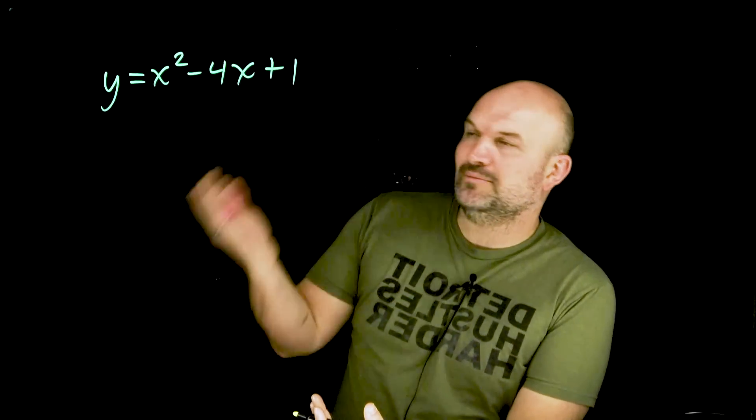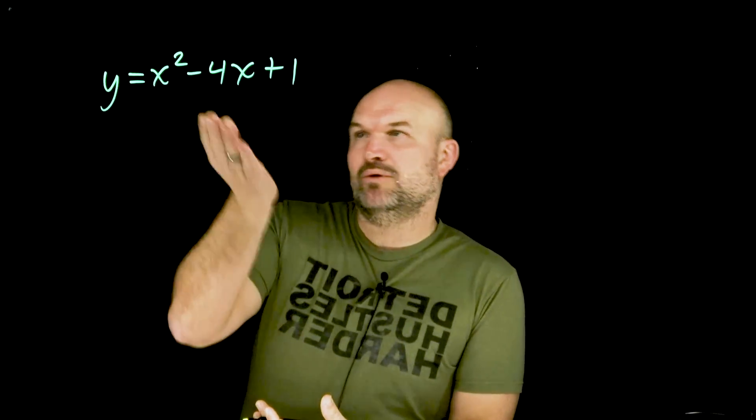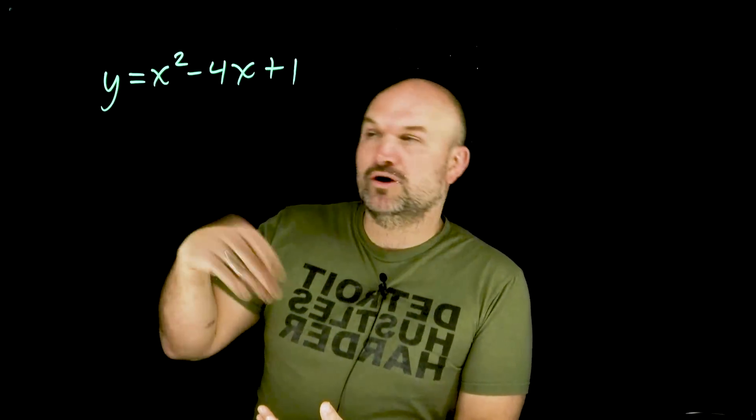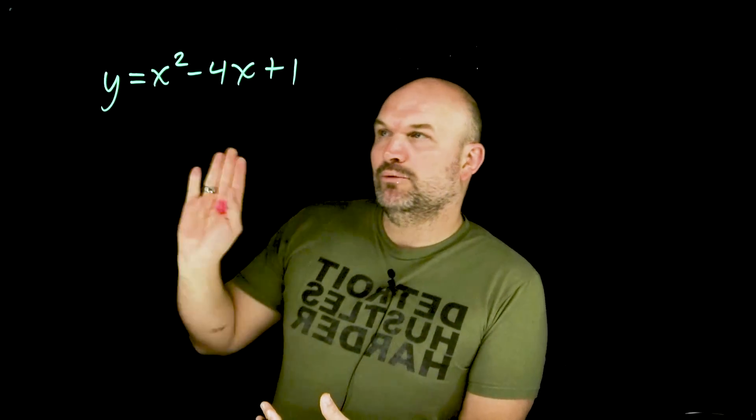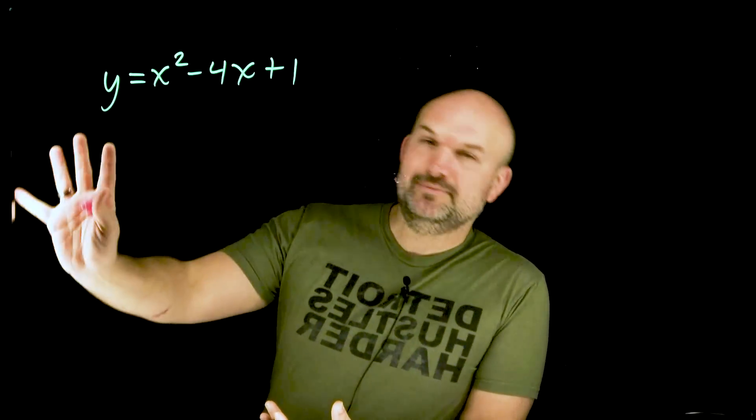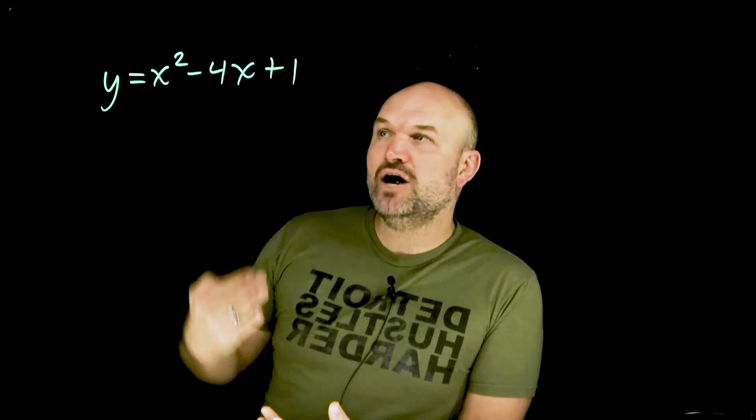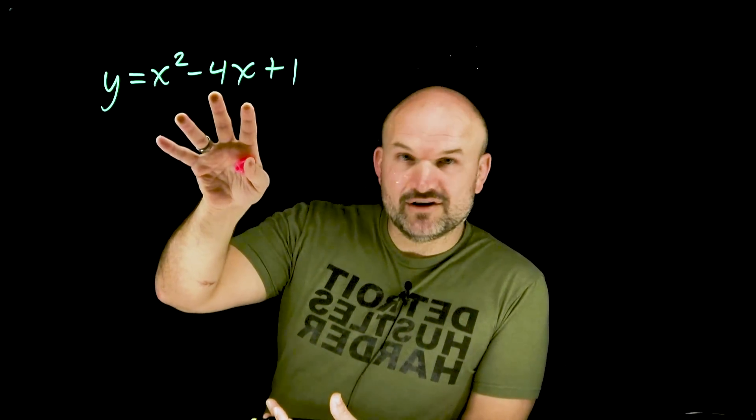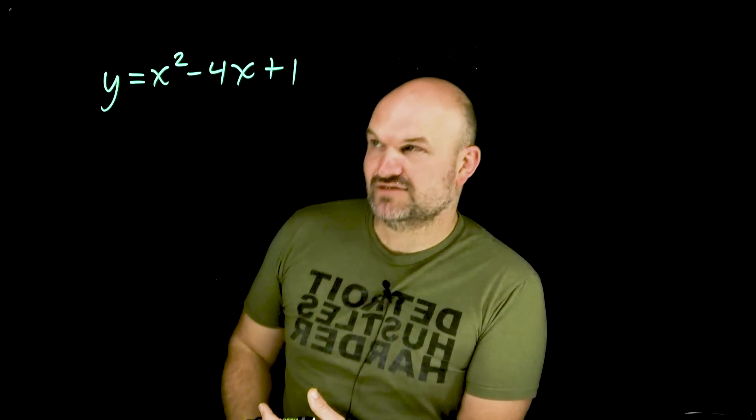Okay, so we use completing the square for a couple different reasons, to either rewrite a quadratic from standard to vertex form, or to go ahead and solve. But when we're using this fast and easy method, I'm gonna keep everything over to one side. We know that completing the square takes a quadratic from standard form and rewrites it into vertex form.